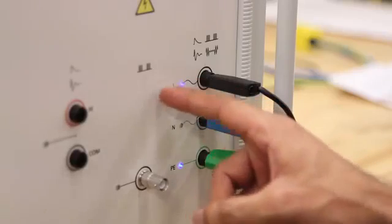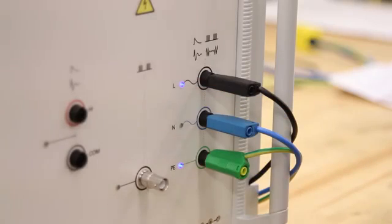While the test is active, the blinking LED lights display the currently active coupling path. For instance, line to PE is currently active. Next, it switches to the N to PE for our third pulse.